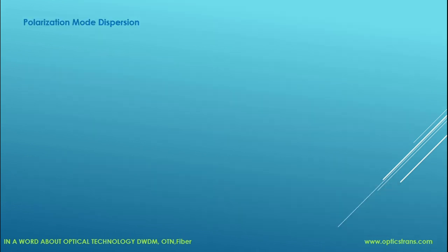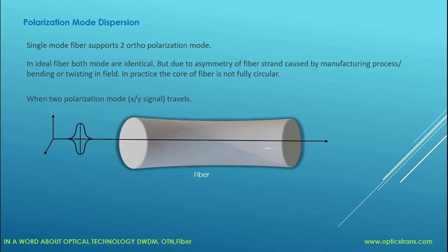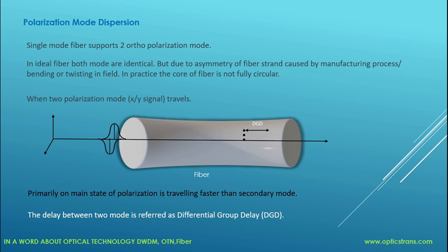Next we have polarization mode dispersion. A single-mode fiber supports two orthogonal polarization modes. In an ideal fiber both modes are identical, but due to asymmetry of the fiber caused by the manufacturing process, bending, or twisting in the field, the core of the fiber is not fully circular. When we transmit two polarization mode signals into a fiber, the primary main state of polarization travels faster than the secondary mode. The delay between these two modes is referred to as differential group delay.